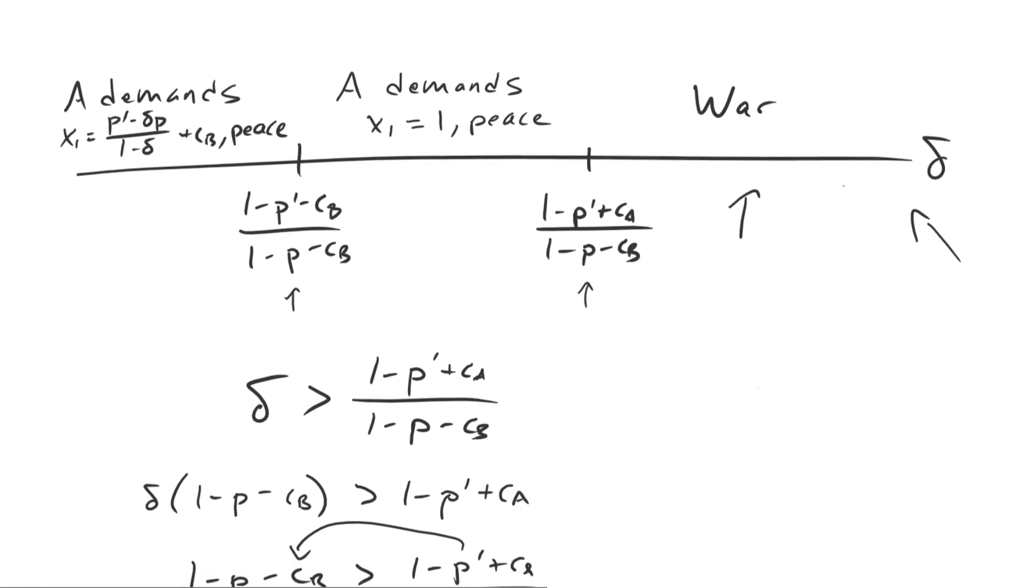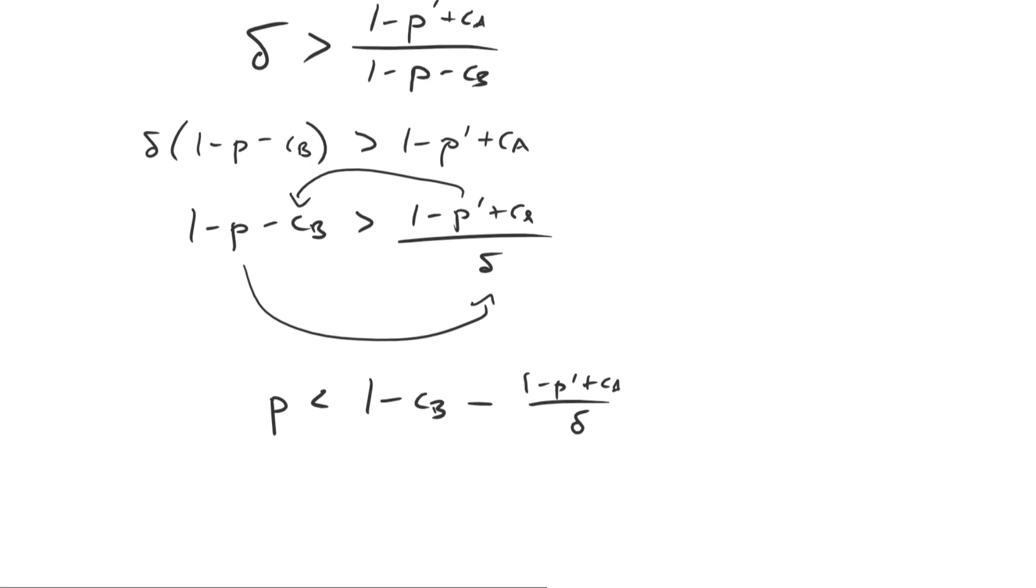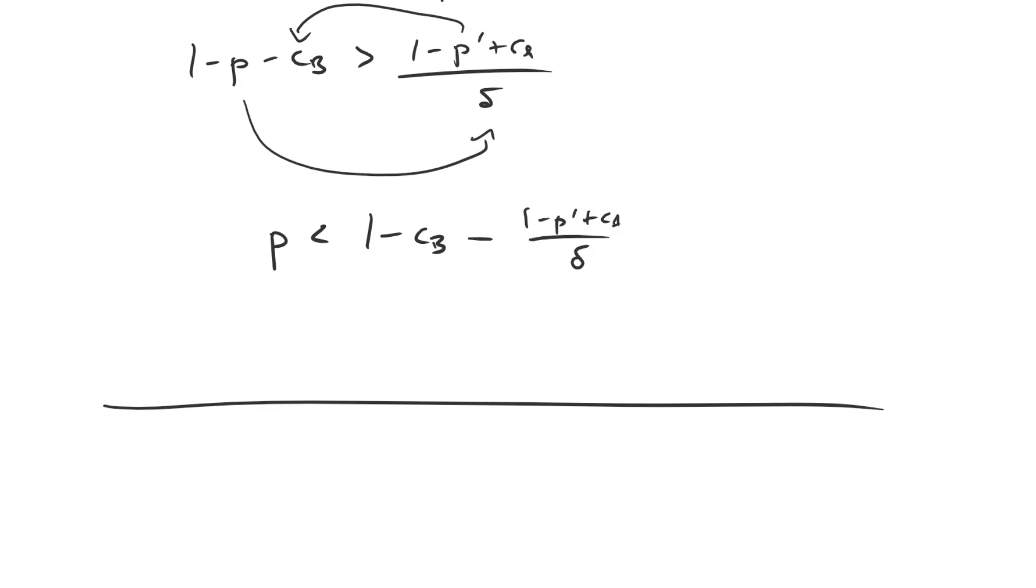So if we're recreating this figure, which will ultimately be very helpful for what we want to do with calculating the expected utility for each of those parameter regions. Let's go ahead and redraw that here. So this is going to be a value between 0 and p prime, which is representing p. And we have our first cut point here, which is 1 minus c_b minus 1 minus p prime plus c_a divided by delta. And if we have a p value less than that, we have war occurring. Now, if you just visually inspect this value right here, it's very obvious that this could be some sort of negative quantity. And if that's the case, if this is a negative quantity, then it's not possible for b to select a value of p that results in war.